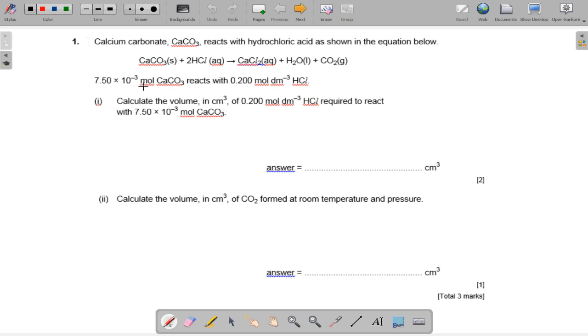For the first two questions now: 7.5 moles of calcium carbonate reacts with 0.2 moles per decimeter cubed of hydrochloric acid. Calculate the volume in centimeter cubed of 0.02 moles per decimeter cubed hydrochloric acid required to react with 7.5 times 10 to the minus 3 moles of calcium carbonate, and calculate the volume in centimeter cubed of CO2 formed at room temperature and pressure.